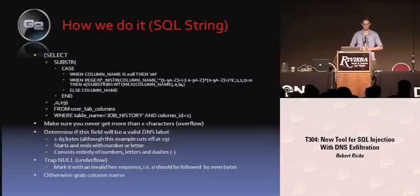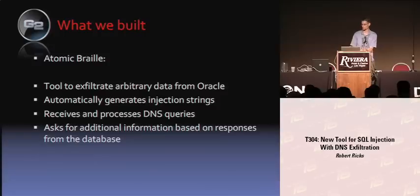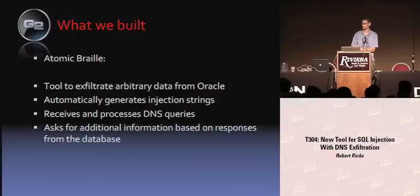So Atomic Braille — what is it? It's a tool to exfiltrate arbitrary data from Oracle. It automates generating the injection strings, so you don't have to type anything out about how to inject. It receives and processes the DNS queries, so you don't have to look at Wireshark and read the data yourself — it all happens behind the scenes.